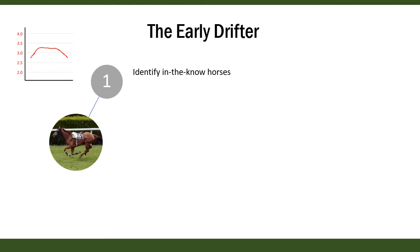When there's insufficient information, trainers can allow their favourites to drift before coming in with the money. This means the early part of the graph is less likely to represent weakness. Our model depends on the first part of the graph representing weakness, so we want to identify and avoid races where the favourite is an insufficient information horse. With almost all my trading strategies I exclude races where the favourite is an insufficient information horse.